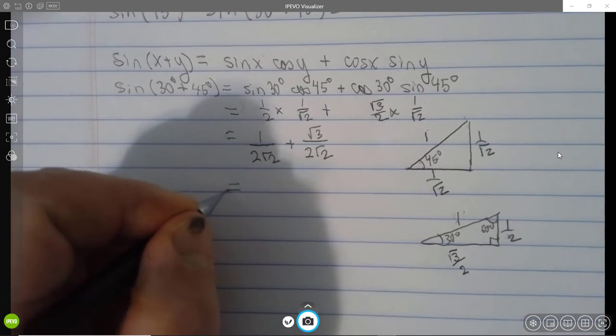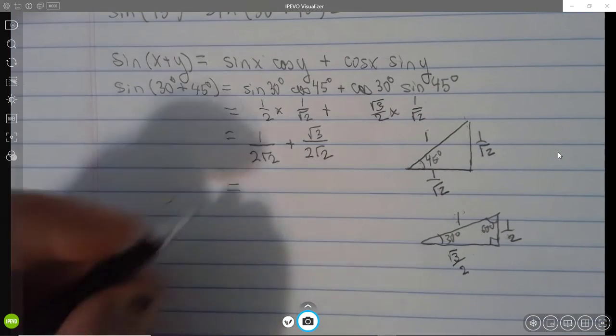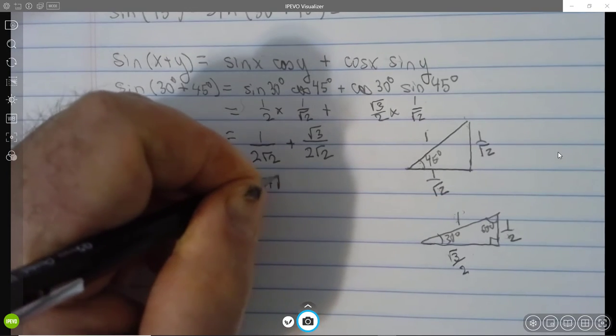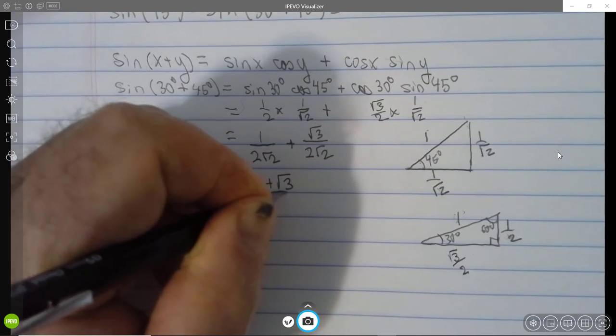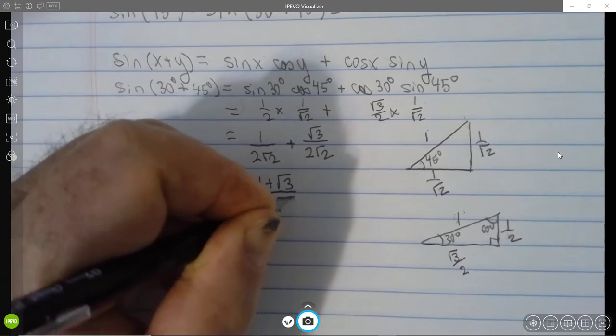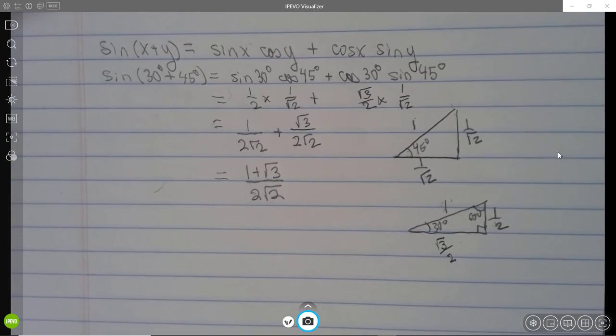And we, by good luck, have a common denominator already. So that's 1 plus root 3 over 2 root 2. And it may be that Alex would accept this answer.